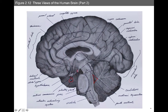Here we have the pituitary gland, referred to as the master gland because of its key role in hormone production. We have the anterior commissure, which connects the two hemispheres. The corpus callosum — circled in red — has four divisions: the splenium, the isthmus, the genu, and the rostrum. They're all parts of the corpus callosum connecting the two hemispheres. It's white in color because it's mostly myelin — mostly axons. And the thalamus is the central switchboard through which all information heading to the cortex must pass.